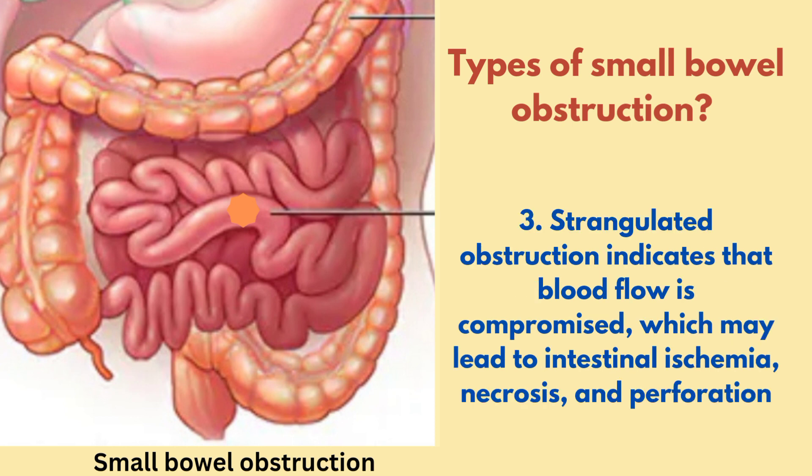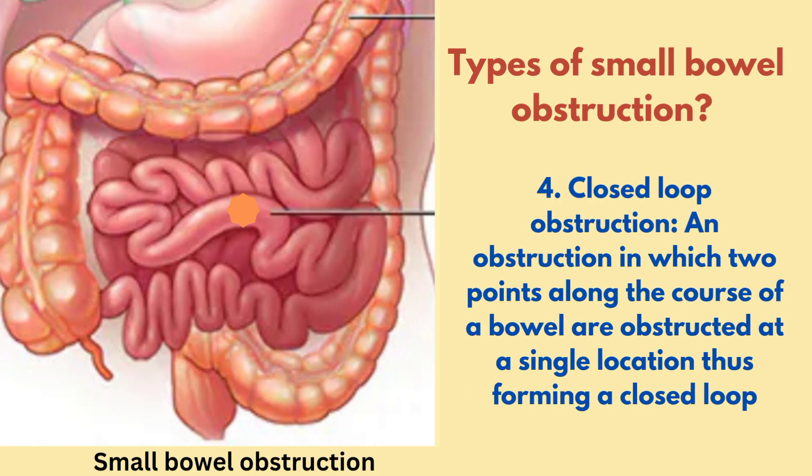Strangulated obstruction indicates that blood flow is compromised, which may lead to intestinal ischemia, necrosis, and perforation. Closed-loop obstruction is an obstruction in which two points along the course of a bowel are obstructed at a single location, thus forming a closed loop.